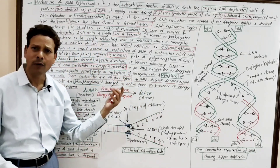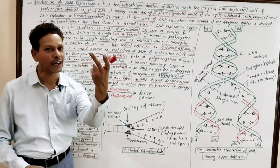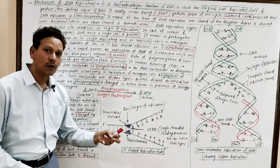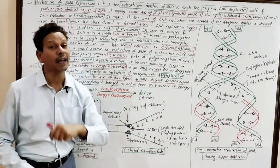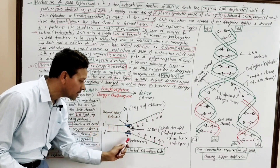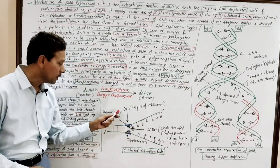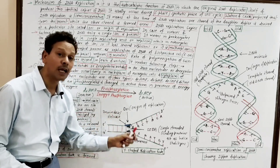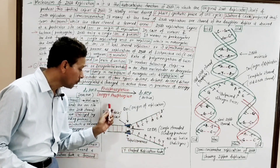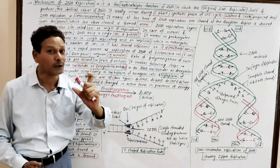In the case of prokaryotes and bacteria, it is believed that only a single enzyme — gyrase — acts as both helicase and topoisomerase. But in the case of eukaryotes, these two functions are performed by two separate enzymes: helicase for uncoiling and topoisomerase for tension release.